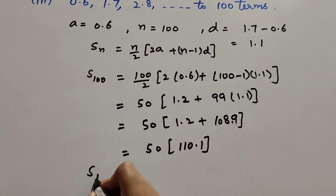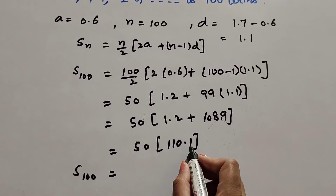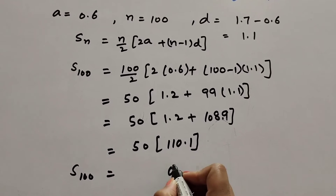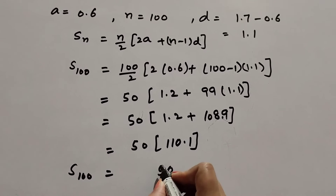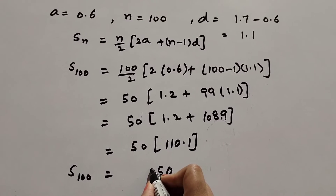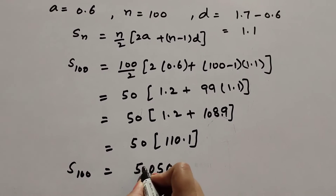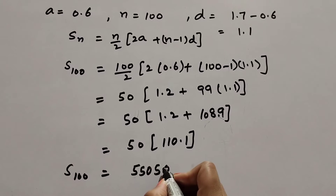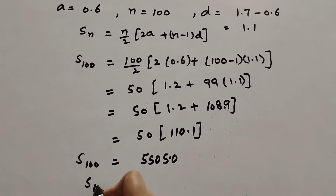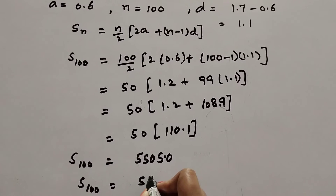So the sum of 100 terms is equal to 50 × 110.1 = 5,505. The sum of 100 terms of the given AP is 5,505.